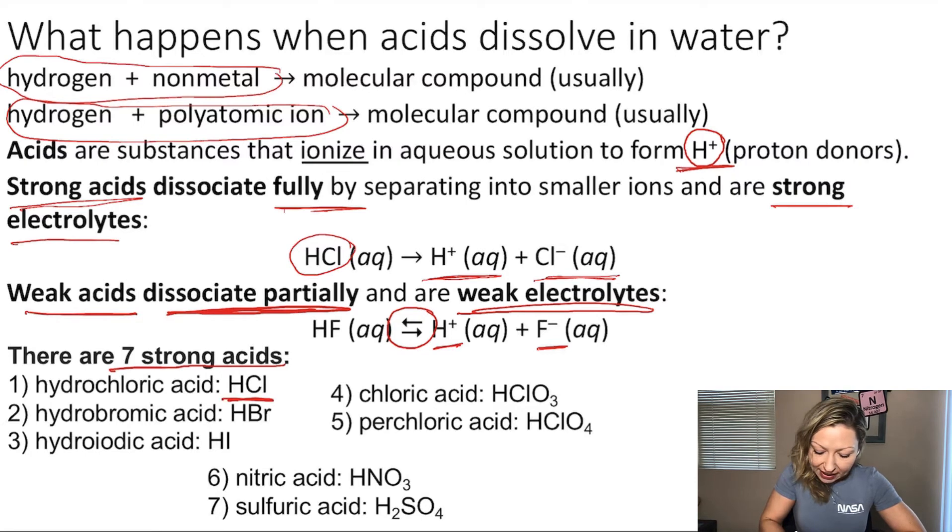Hydrochloric acid, hydrobromic acid, hydroiodic acid, chloric acid, perchloric acid, nitric acid, and sulfuric acid. And those are the only seven strong acids.